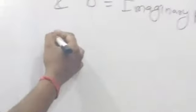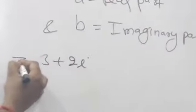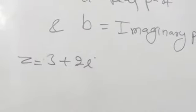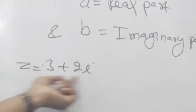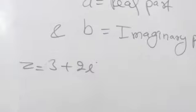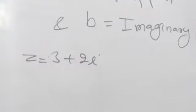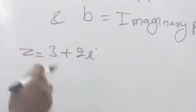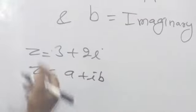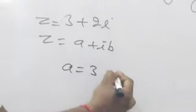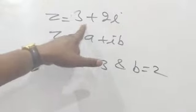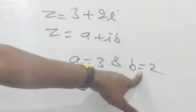For example, suppose Z = 3 + 2i. This is a complex number because it contains i. How we can find the real part and imaginary part? Comparing with Z = A + iB: A = 3 and B = 2. Then 3 is the real part and 2 is the imaginary part.